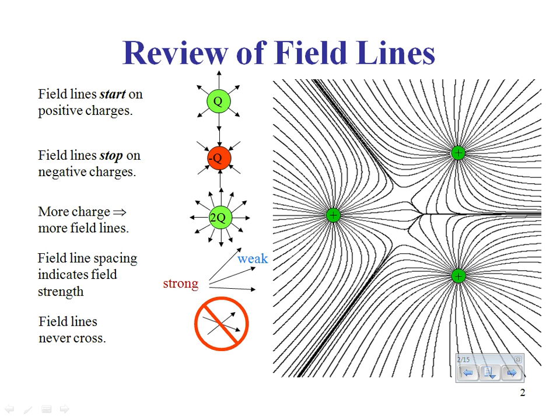If field lines crossed, you'd be saying the electric field is pointing in two different directions at that point — that if you put a positive charge there, it feels a force in one direction and also in a different direction. You're not saying the forces add together; you're saying the direction is two separate directions, which it can't be. It's either one direction or another.